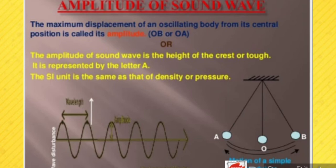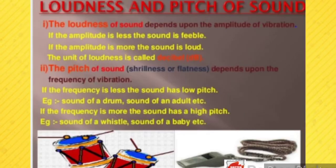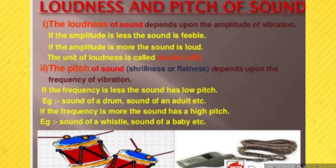The loudness of sound depends on the amplitude of vibration. If amplitude is less, the sound is feeble; if amplitude is more, the sound is loud. The SI unit of loudness is the decibel, represented by dB. The pitch of sound depends on the frequency of vibration. If frequency is less, the sound has a low pitch — for example, the sound of a drum or an adult's voice. If frequency is more, the sound has a high pitch — for example, a whistle or a baby's voice.